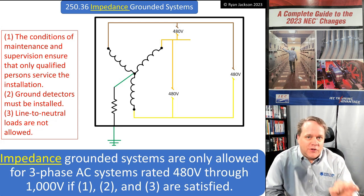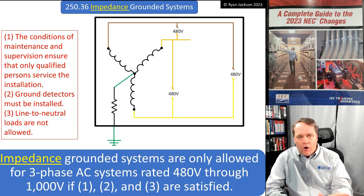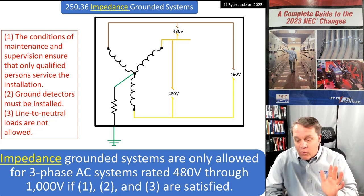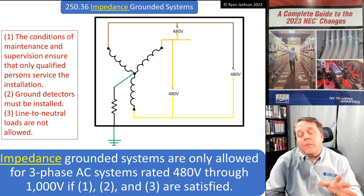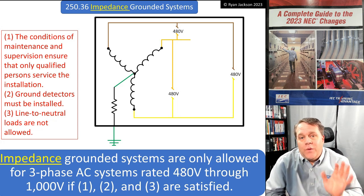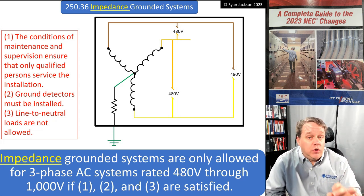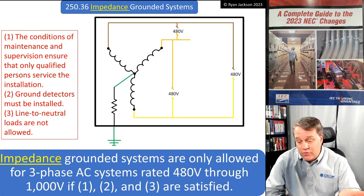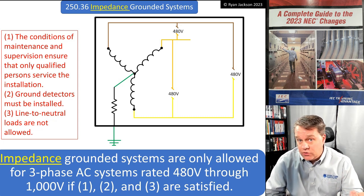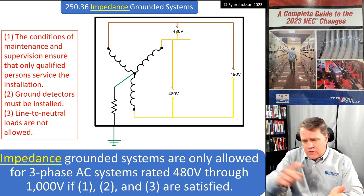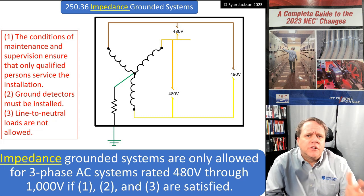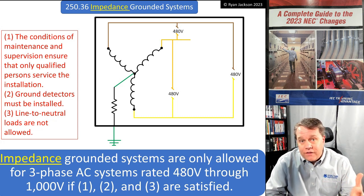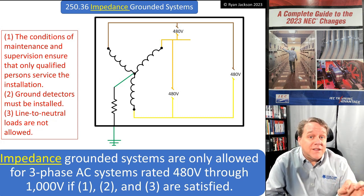The old name 'high impedance grounded neutral systems' always drove me crazy. Believe it or not, prior to the 2005 NEC we did not define the word 'neutral.' We talked about the grounded conductor and we talked about the neutral conductor in Article 310 - we said the neutral conductor carries the unbalanced current - but we didn't define it.